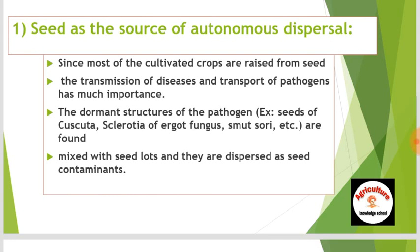Since most cultivated crops are raised from seed, the transmission of diseases and transport of pathogens has much importance. The dormant structures of the pathogen — for example, seeds of Cuscuta, sclerotia of certain fungi, smut spores etc. — are found mixed with seed loads and they are dispersed as seed contaminants.